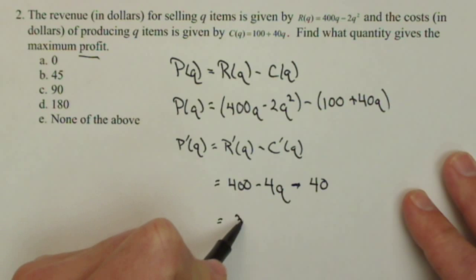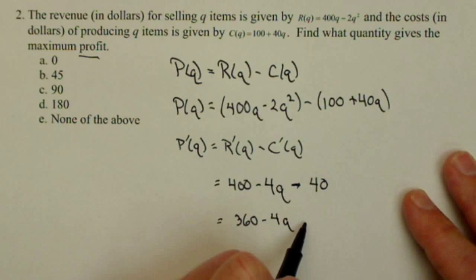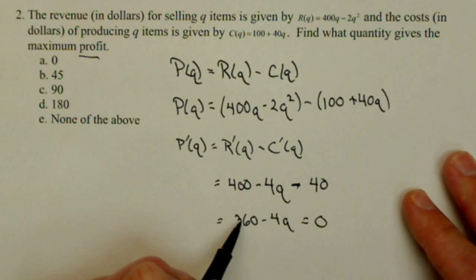So we get 360 - 4q gives our derivative of our profit. We're going to set that to 0, and solving that for q is going to give us 90.